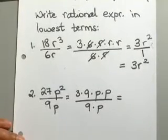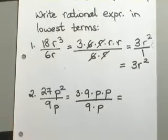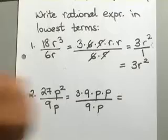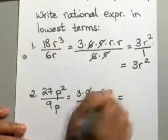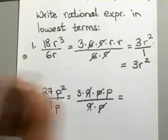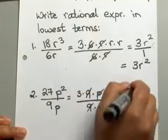So just like we did earlier, go ahead and cancel out all your common factors. So you can cancel out the 9s, and you can cancel out one of the p's. So that leaves us with 3p on the numerator.